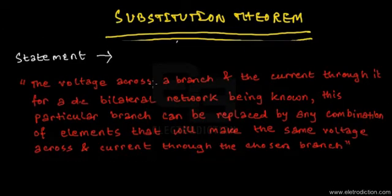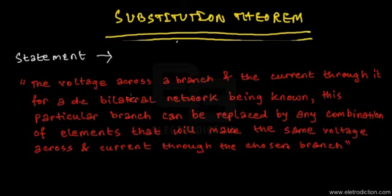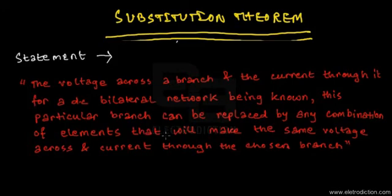The statement of the Substitution Theorem states that the voltage across a branch and the current through it for a DC bilateral network — you'll already know what a bilateral network is as we've discussed in the previous tutorials — being known, this particular branch can be replaced by any combination of elements that would make the same voltage across and current through the chosen branch.